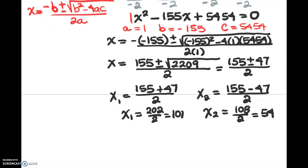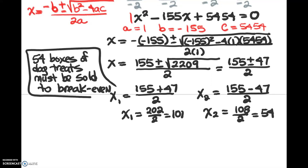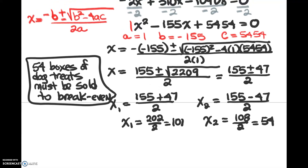So 54 is the smallest breakeven point. Remember, 54 is an x value — this is a quantity. In our problem, the x values represent dog treats, so 54 boxes of dog treats must be sold to break even. We found that breakeven quantity by first finding our profit function and then setting it equal to zero. I hope this has been helpful, and we'll see you next time.